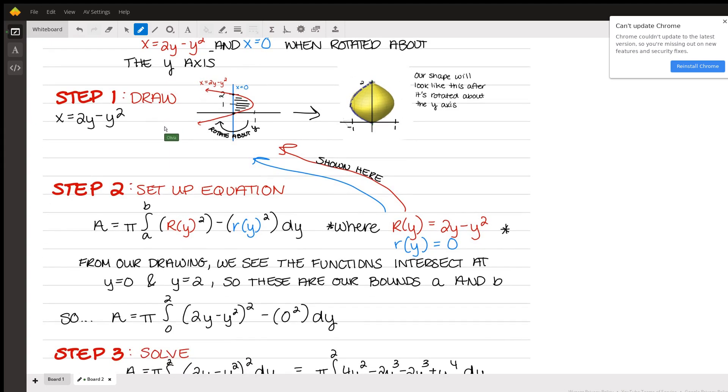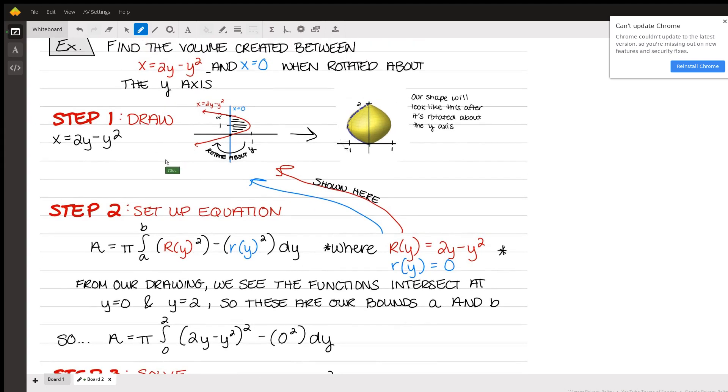So step one, I always like to draw an image. This will help you visualize. This will help you kind of set up your problem from here. So if you graph the function given x equals 2y minus y squared, you're going to get this parabola right here. You could use Desmos or a graphing calculator or anything like that.